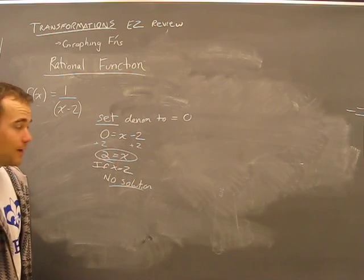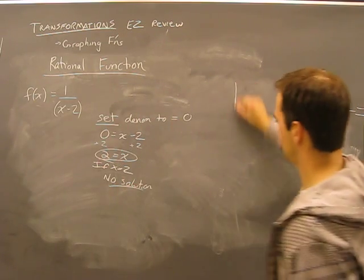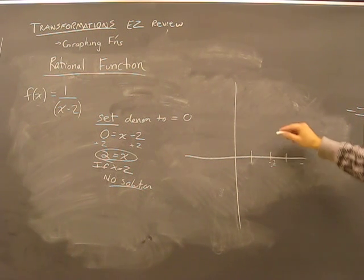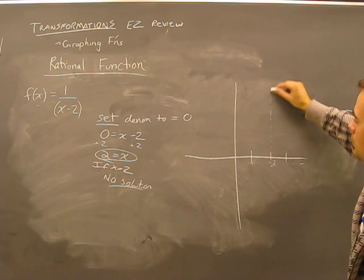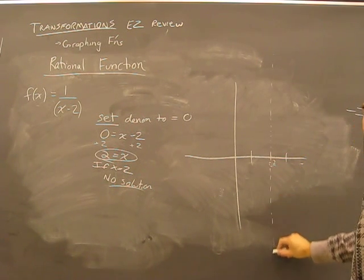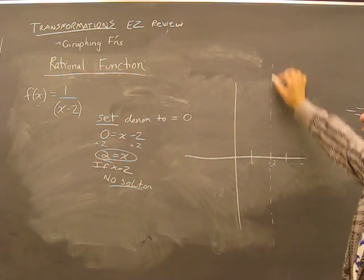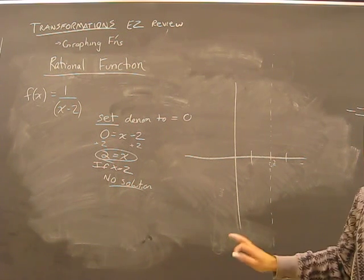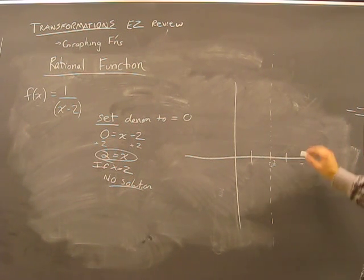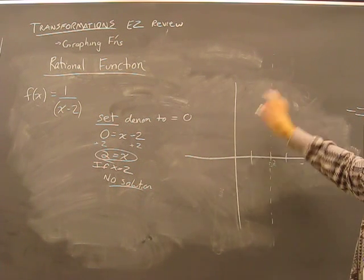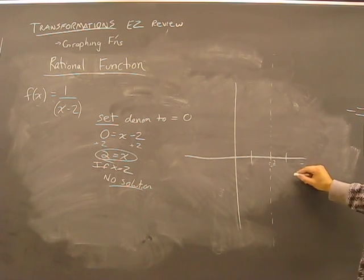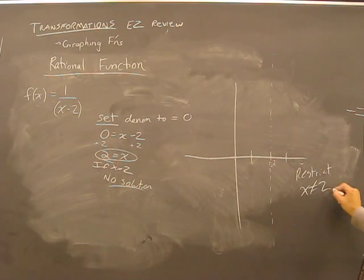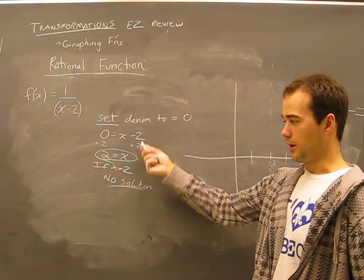OK, what that means on the graph: here's a graph, one, two, three. OK, at this point here, two, forever up and forever down because there's no solution. That means no line will cross this line. OK, no line will cross this line. It's a restriction. X cannot equal two. That is, no point on this, whatever we have here, will equal two.